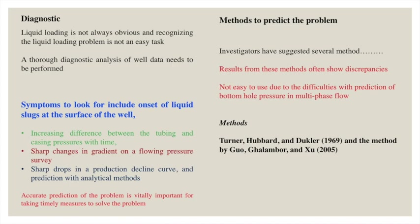A second symptom is a sharp change in gradient on the flowing pressure survey, which indicates liquid loading formation. Finally, a sharp drop in the production decline curve is also a symptom, and analytical prediction methods are also adopted to identify the causes of liquid loading. Accurate prediction of such problems is vitally important for taking timely measures.